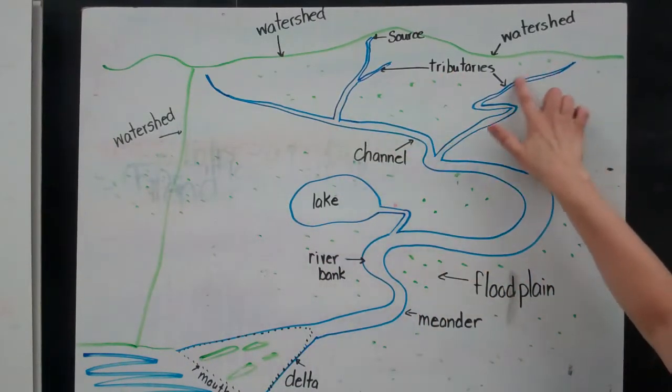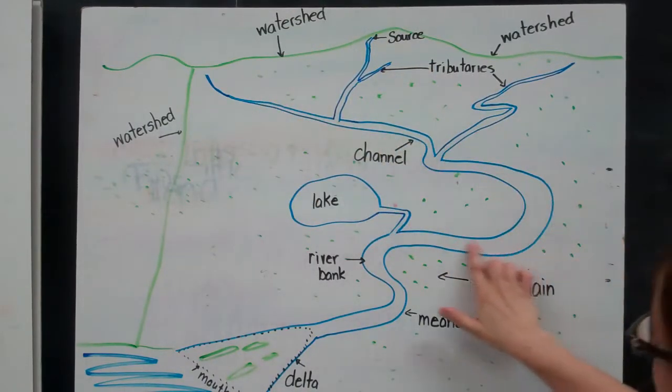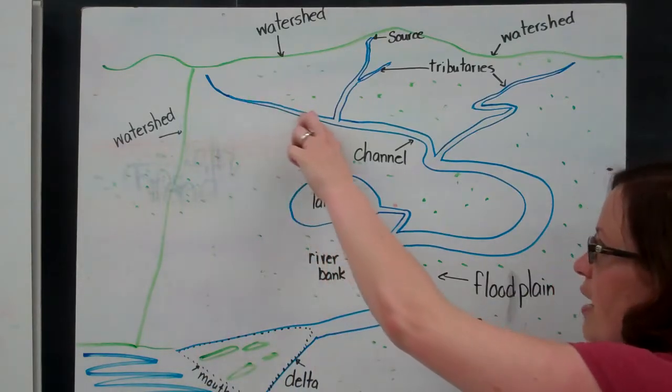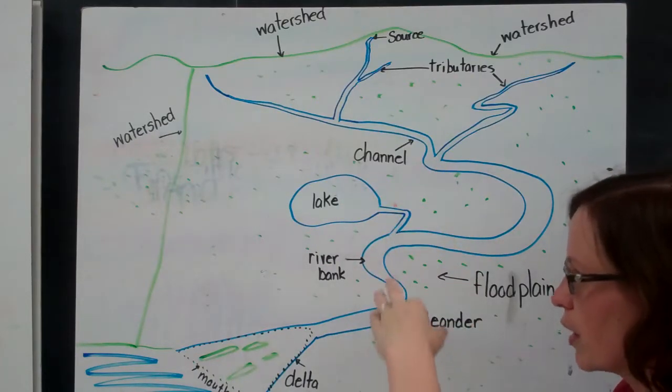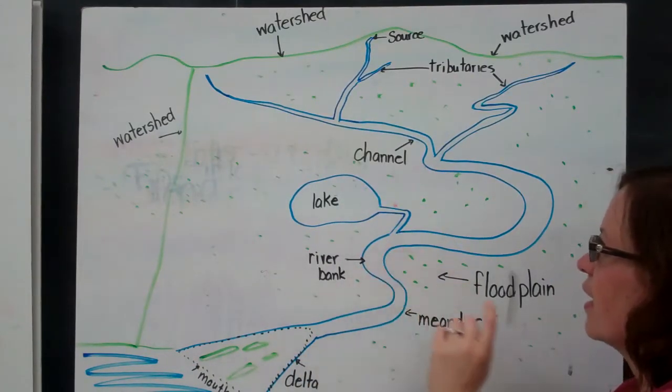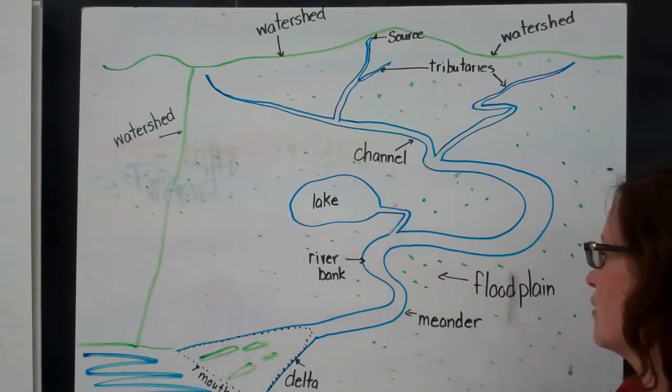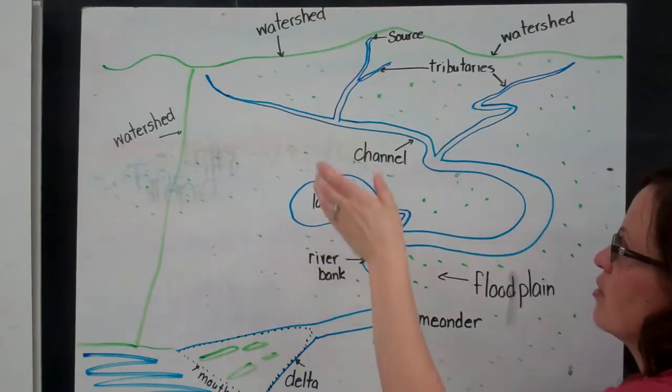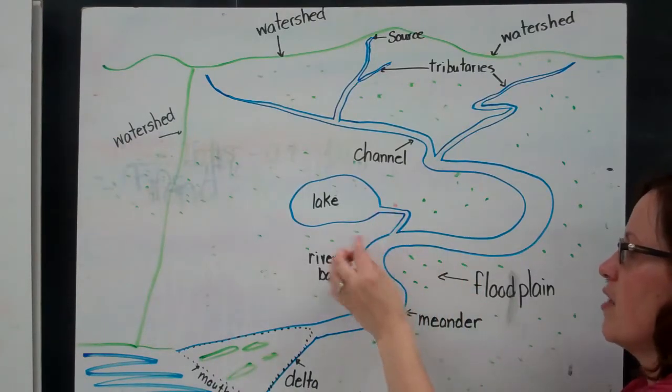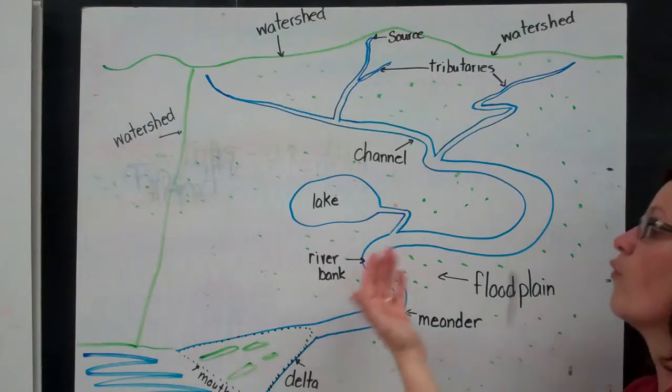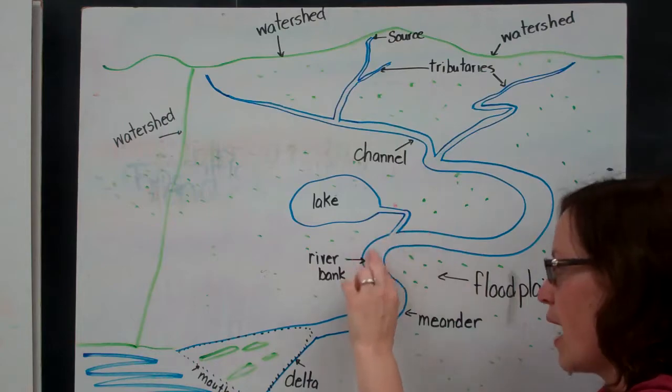We have our tributaries, these smaller river branches that lead into the larger main path. Our channel, the main path that our river system occurs, where we have that depression so it would be lower into the earth's surface. Our riverbanks on either side. We have a lake here, the tributary that leads into our channel. Our floodplain in this area here, so in the springtime, the water levels might rise and this area would become flooded because the water would go over the riverbanks and flood this land area. And then eventually it would recede and go back into the proper channel.